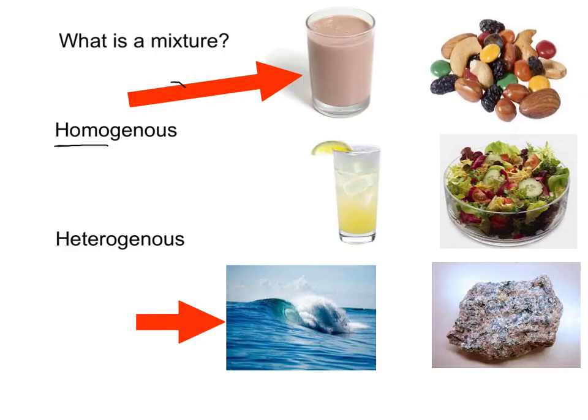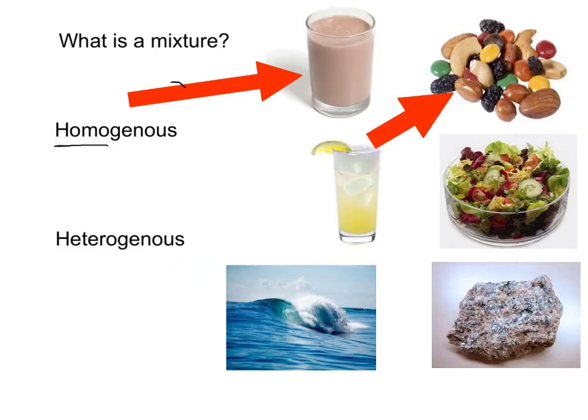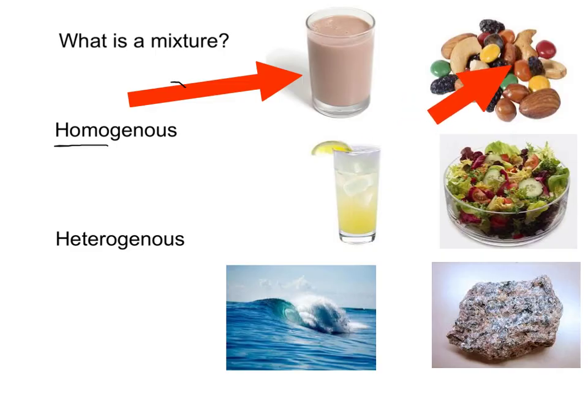Now let's go over to heterogenous. For things that are heterogenous, such as trail mix, you can see trail mix has all kinds of goodies in there. Let's say all you were interested in were the green M&Ms — you could take those out. That means for a mixture, you can separate it by physical means. You can take it apart.